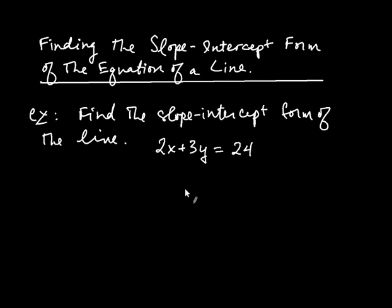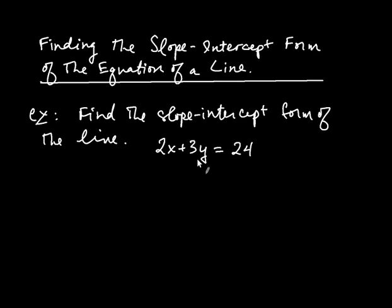In this video, we're going to practice finding the slope-intercept form of the equation of a line. We're asked to do that in this example: find the slope-intercept form of the line 2x plus 3y equals 24.